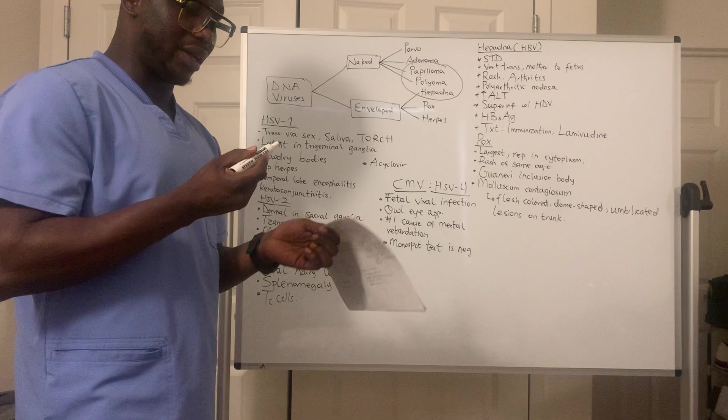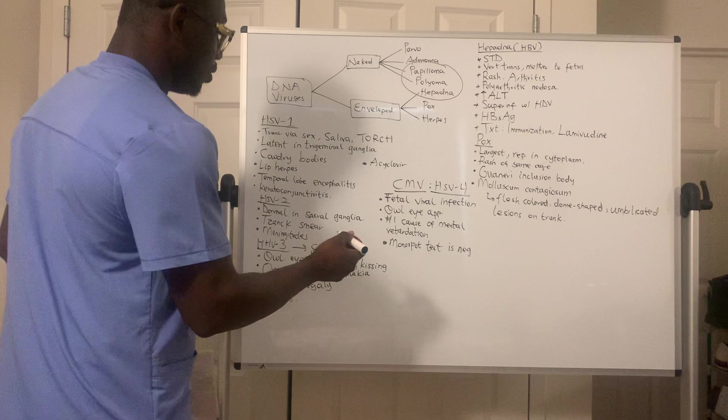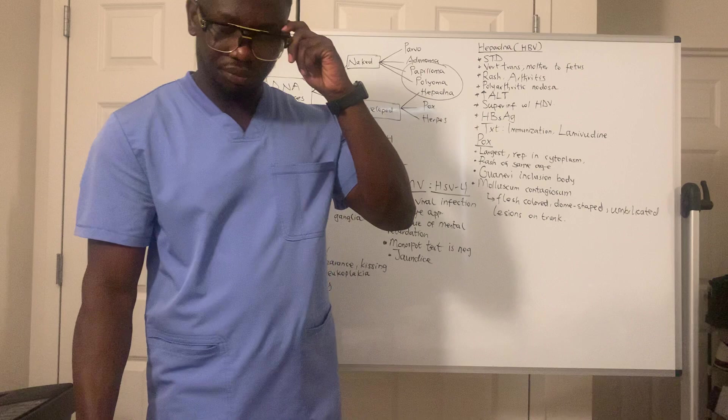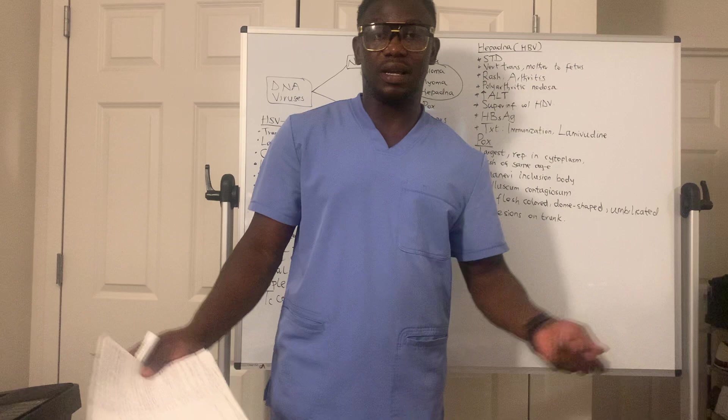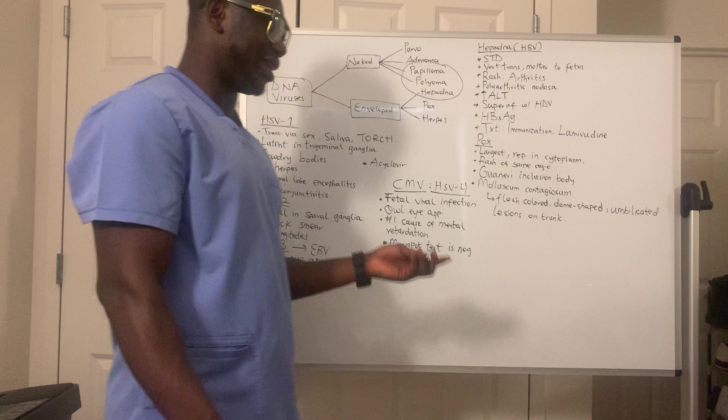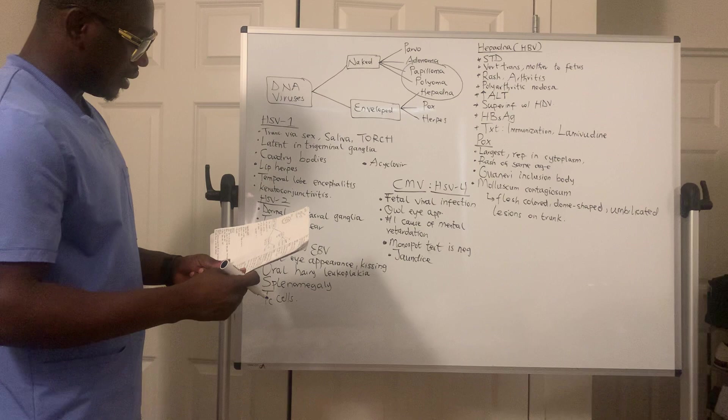CMV can also cause jaundice — yellow discoloration of the eyes. All these keywords together — mental retardation in an infant, owl-eye appearance, jaundice, negative Monospot test — point to Cytomegalovirus.